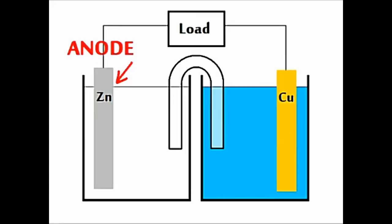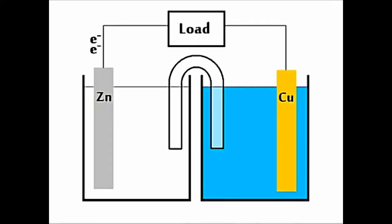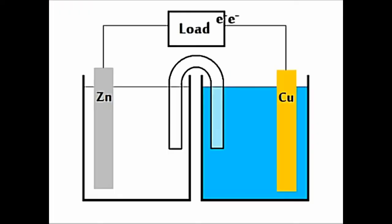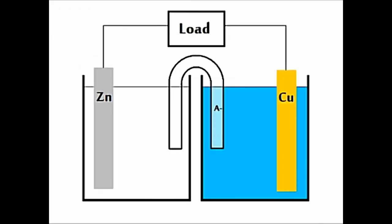We start at the anode. Electrons are lost there, and go through the wire, and through the load on fire. They enter the cathode, and reduce the cations, and the anions go through the salt bridge back to where? Where?